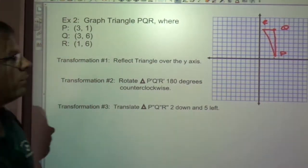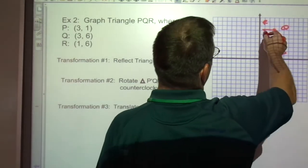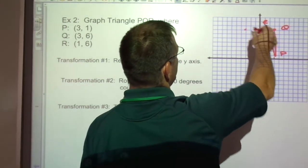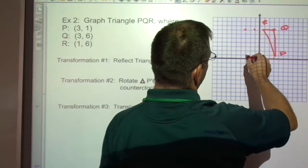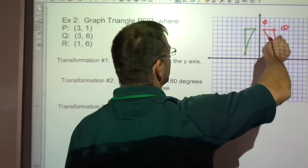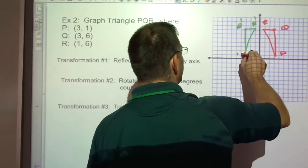I'm going to reflect it over the y-axis, so that is here. So when it reflects, this one's going to come here. This one's 3, so we'll go 1, 2, 3. So this is R prime, Q prime, P prime.